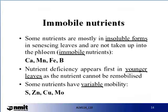Some nutrients are considered non-mobile or immobile and are not taken up by the phloem. These include calcium, manganese, iron and boron. Nutrient deficiency appears first in the younger leaves, as the nutrient cannot be remobilized. Some nutrients have variable mobility; these include sulfur, zinc, copper and molybdenum.